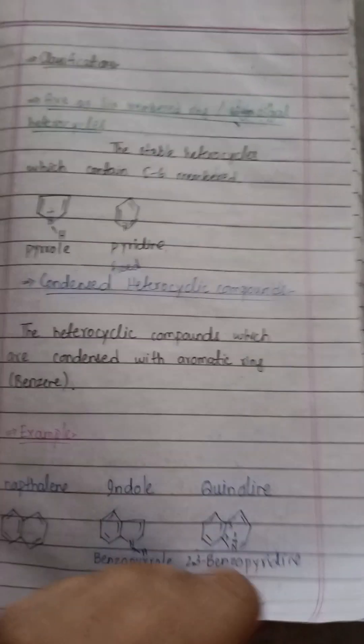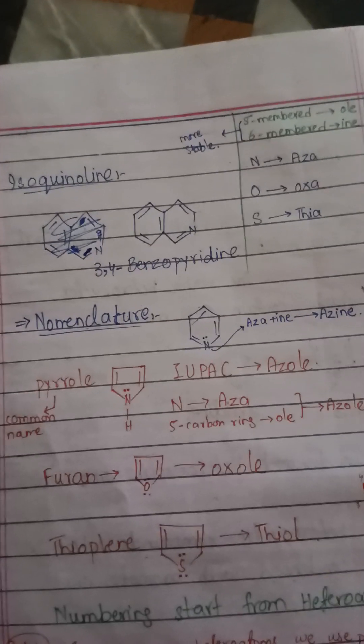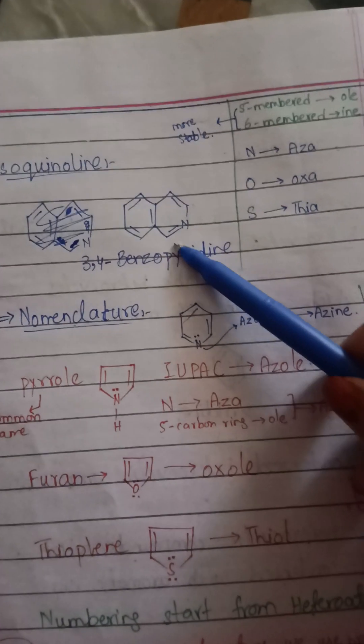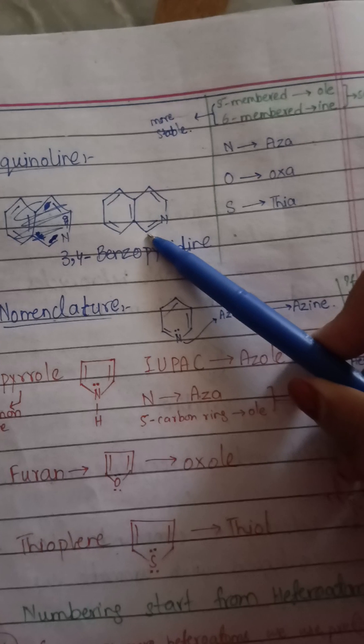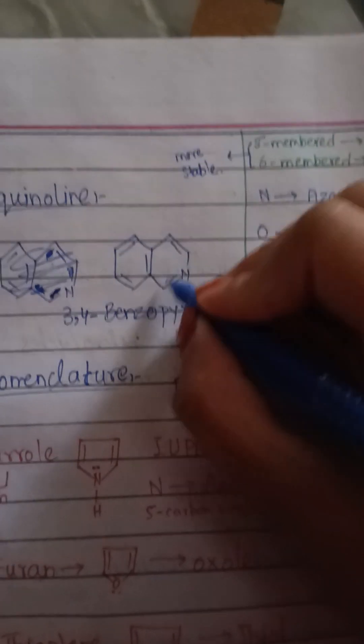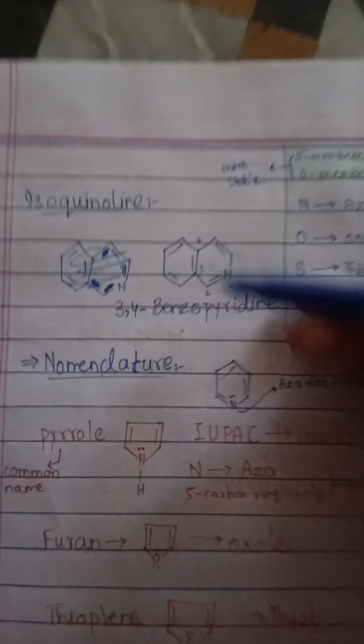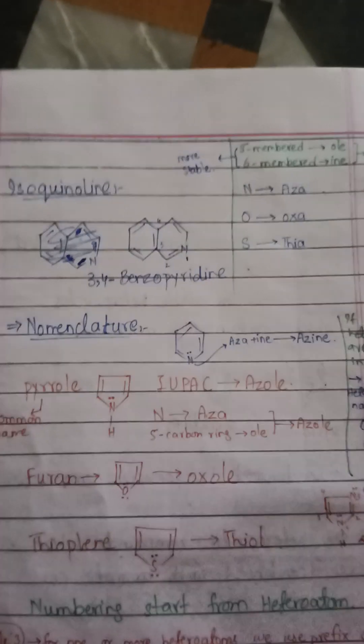Isoquinoline has the same structure as quinoline but with a difference: in quinoline, nitrogen is at one position, but in isoquinoline the nitrogen is displaced. Therefore the numbering changes — positions 1, 2, 3, 4 — and it is called 3,4-benzopyridine.